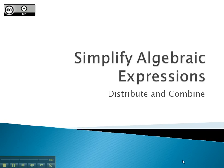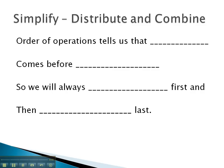In this video, we're going to take a look at how we can simplify algebraic expressions by distributing and combining like terms. Order of operations tells us that multiplication comes before addition. This means we must follow the same pattern to simplify by distributing and combining like terms.